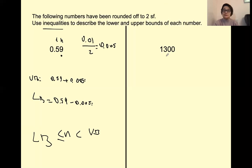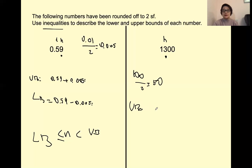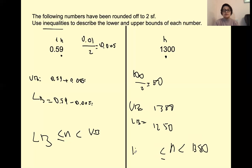For the whole number with two significant figures, the second significant figure is digit three. The place value of this one is the hundreds — actually it's a hundred — so 100 divided by 2 gives us 50, so plus or minus 50. The upper bound is going to be 1350, and the lower bound — take away 50 — is going to be 1250. So the numbers are going to be in this limit: smaller than 1350 and greater than or equal to 1250.